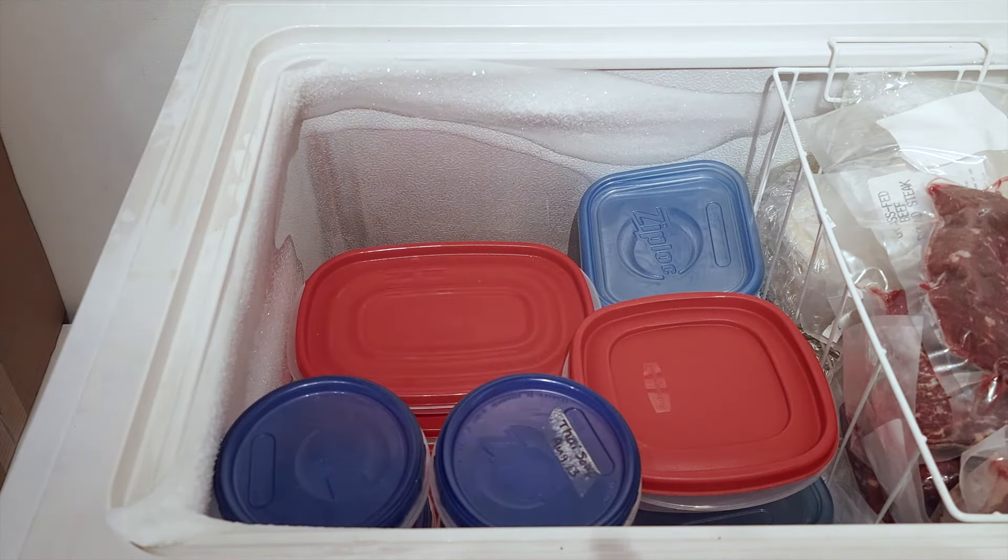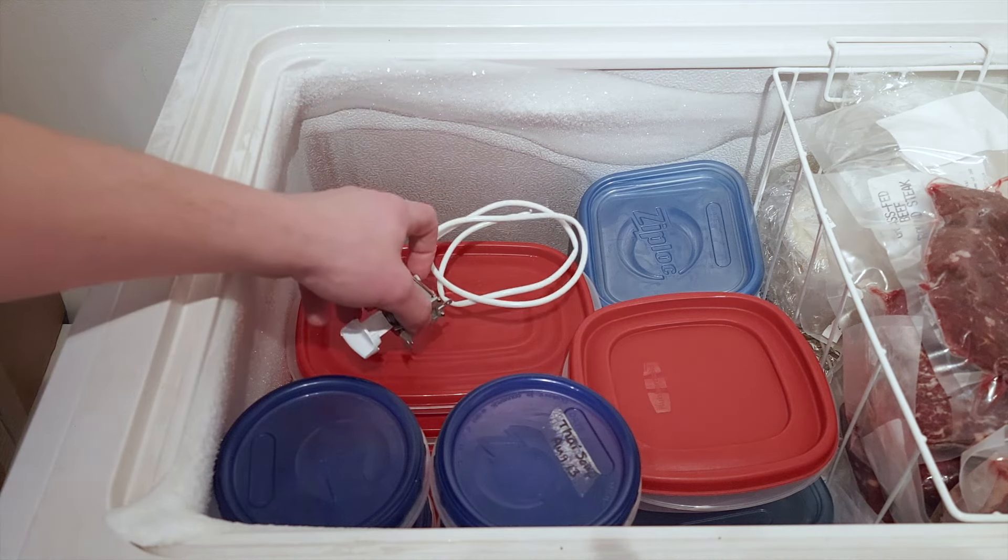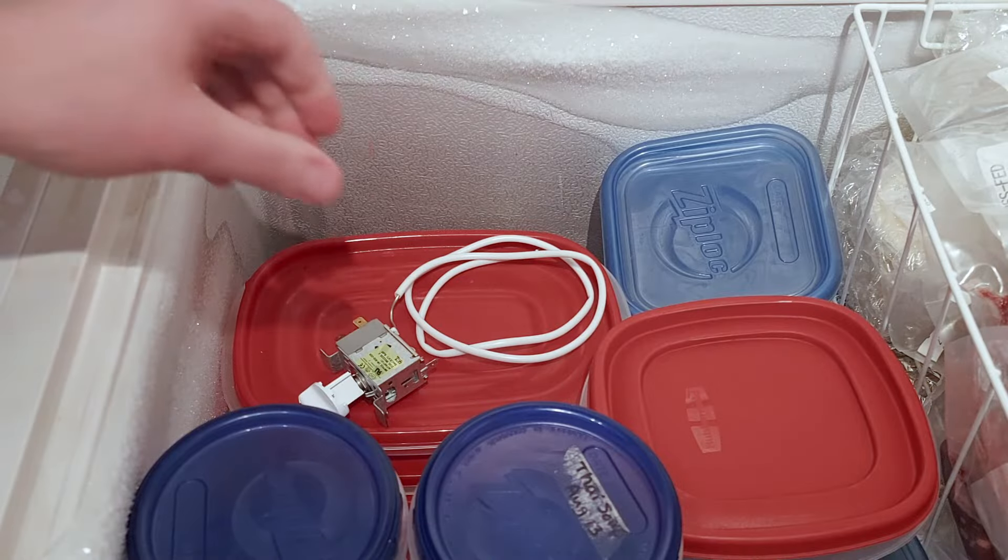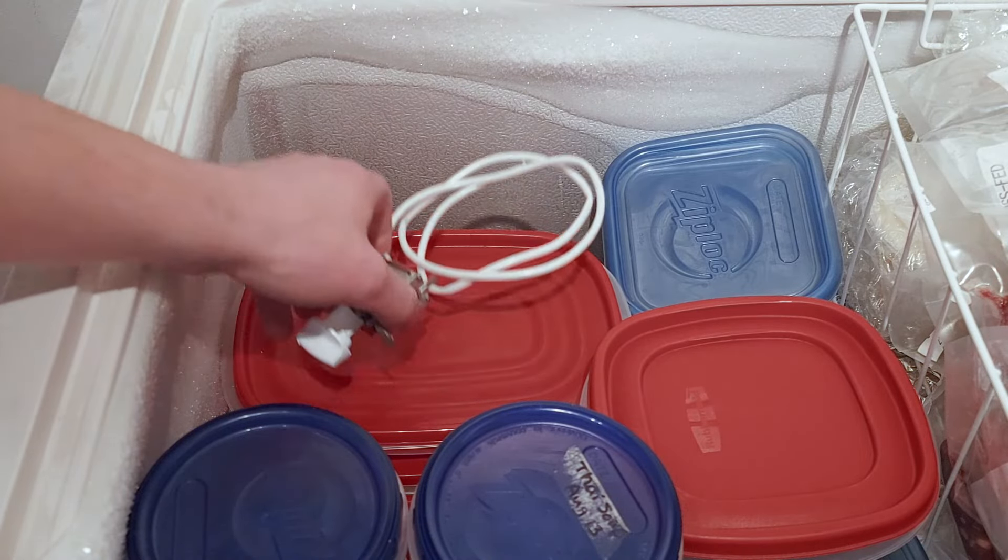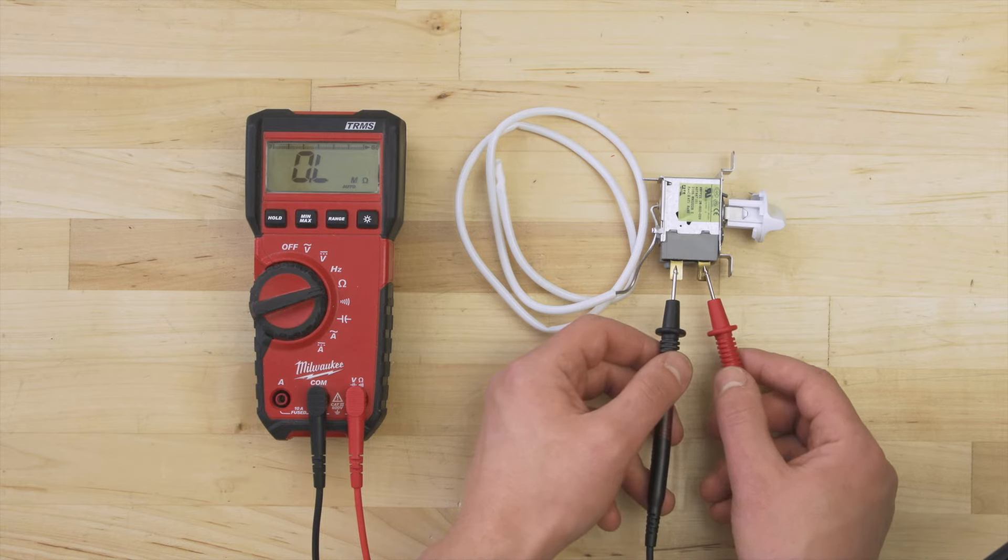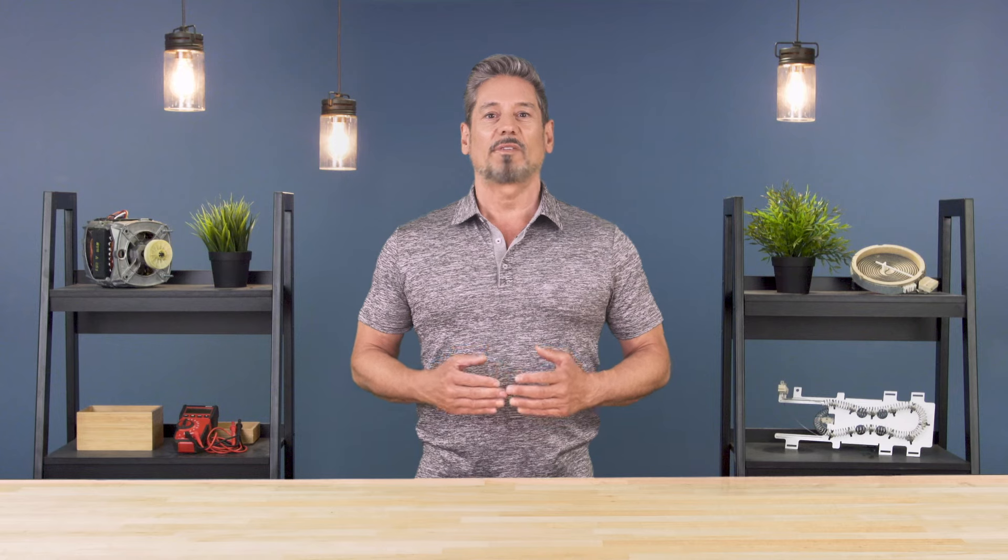You can test to see if the contacts are stuck closed. Set the thermostat to the warmest setting and place it in a working freezer. After 30 minutes, remove it and test. There should be no continuity and no reading on the multimeter. If it fails the test, then the thermostat is faulty and will need to be replaced.